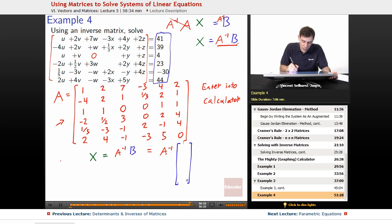What is our B? We enter in the column matrix, 41, 39, 4, 23, negative 30, 44. We make sure that our A inverse is multiplying from the left side, otherwise it won't work at all. And what does this wind up coming out to be?